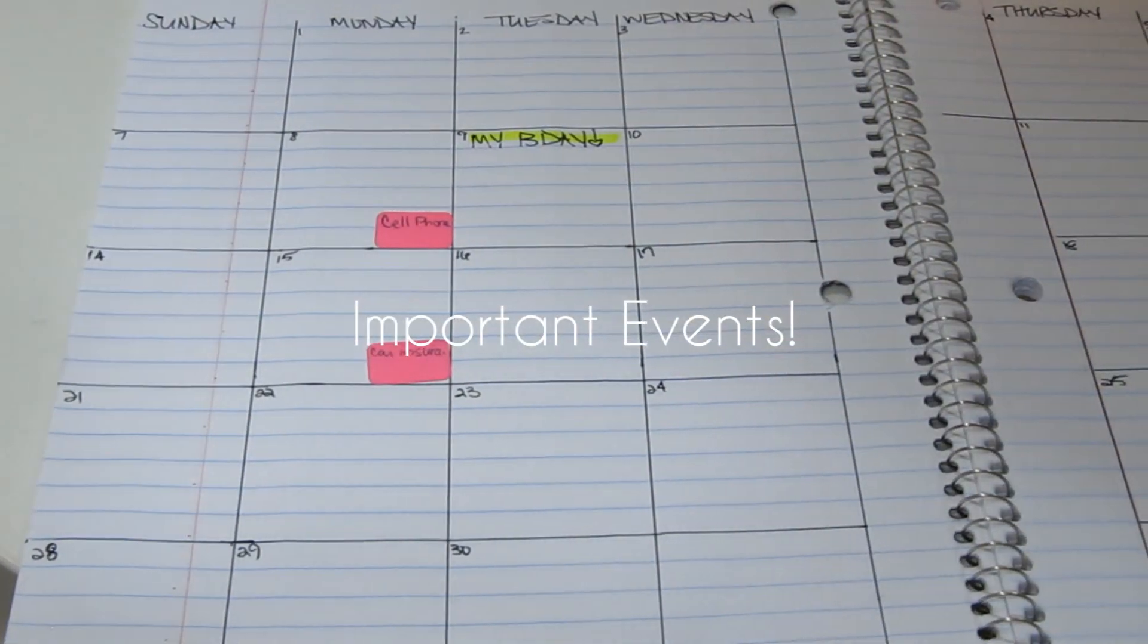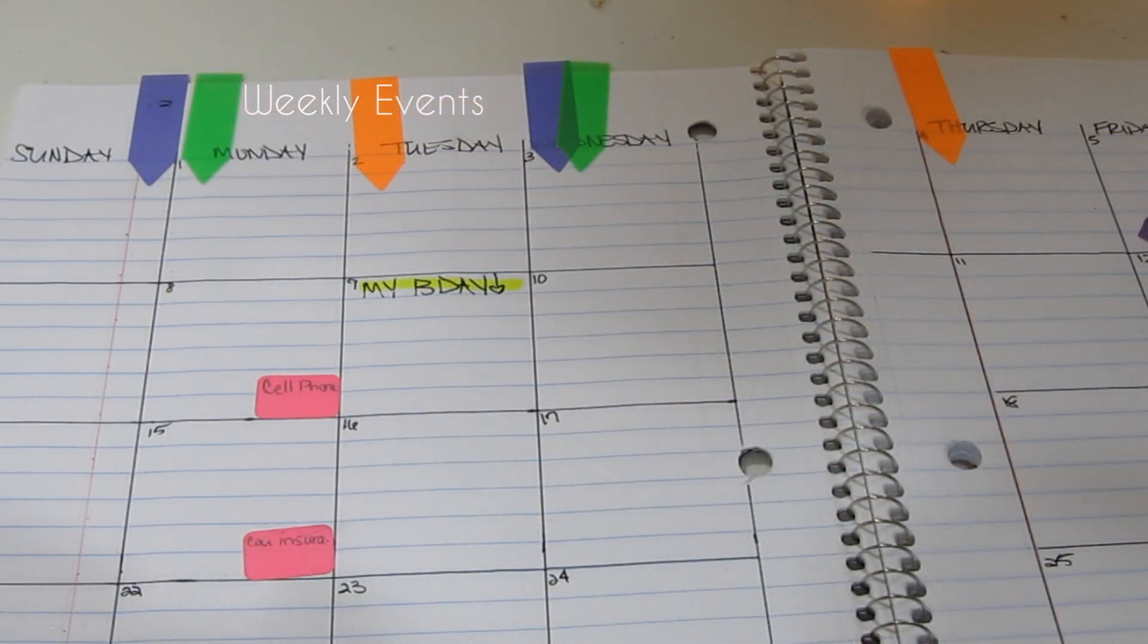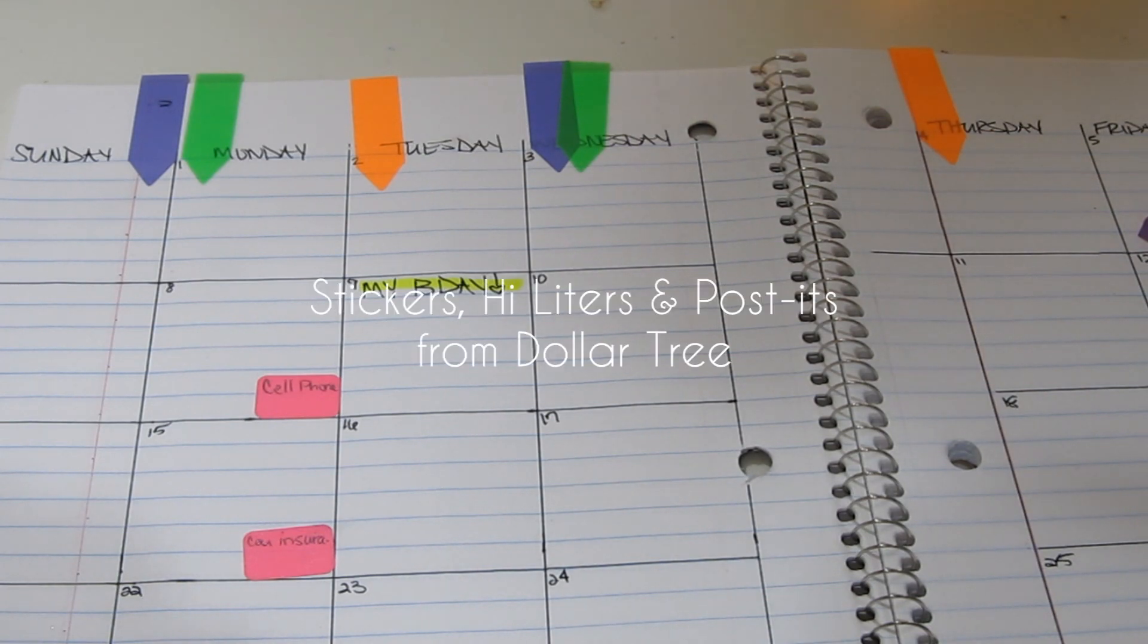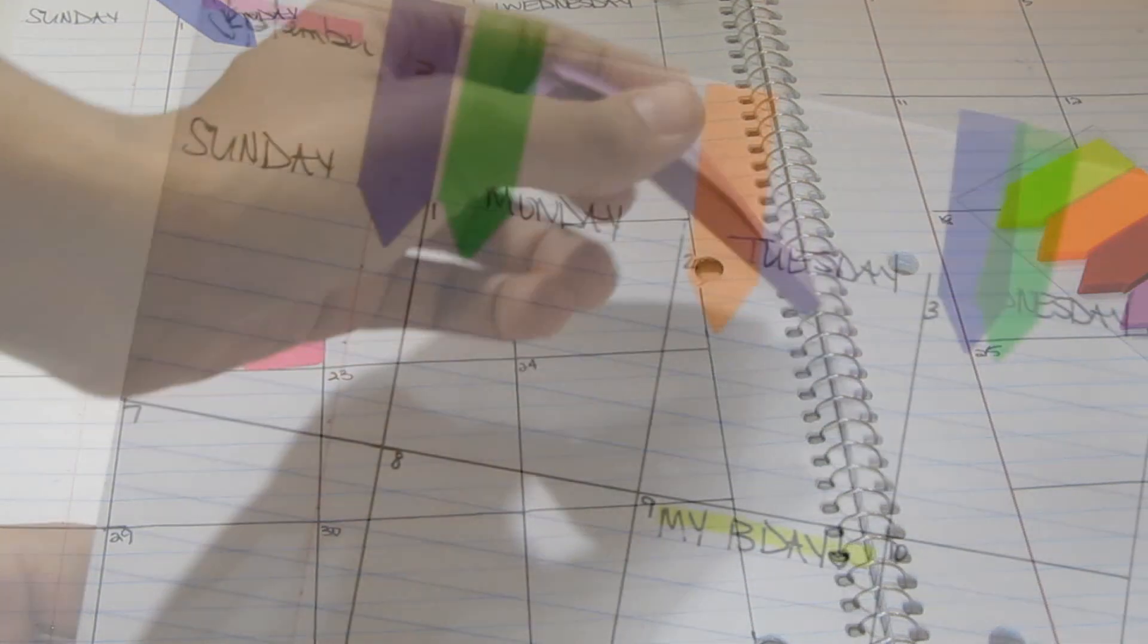I like to make everything color-coded because it makes it so much easier for me to see everything. But this is your planner, so make it personal. Make it look however you feel comfortable. After all, you are the one that's going to be using it.